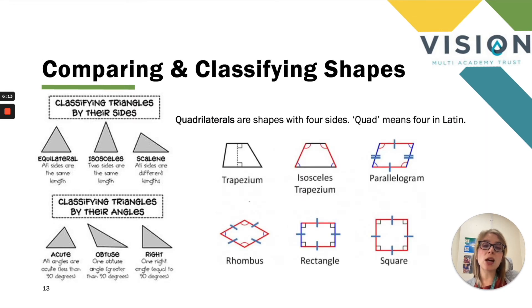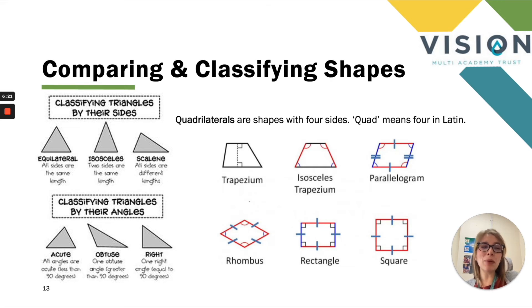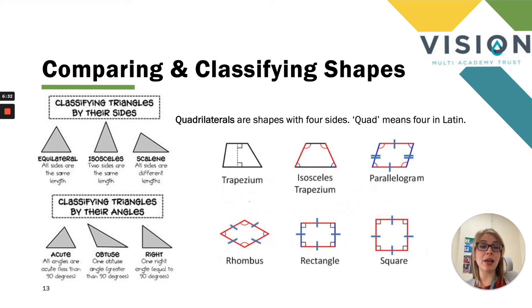Let's start by classifying and comparing shapes. If we start with triangles, we can classify them by their sides. In year four there are three different types. An equilateral triangle has all sides the same length. An isosceles triangle has two sides the same length. And a scalene triangle has all sides of different lengths.